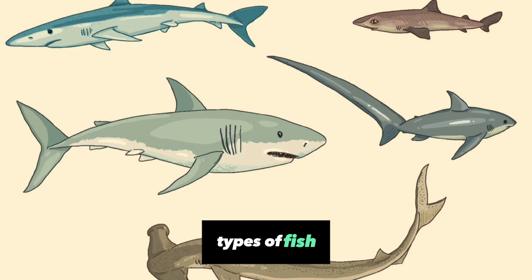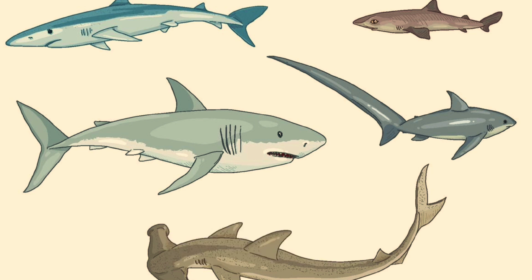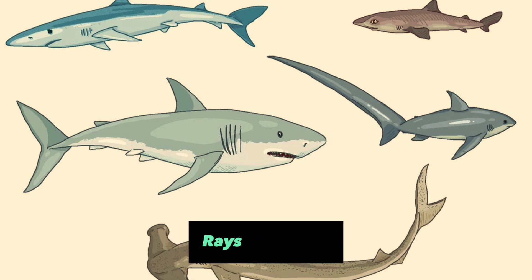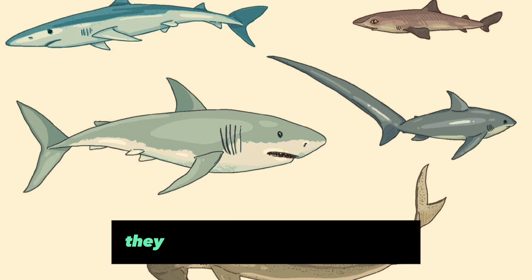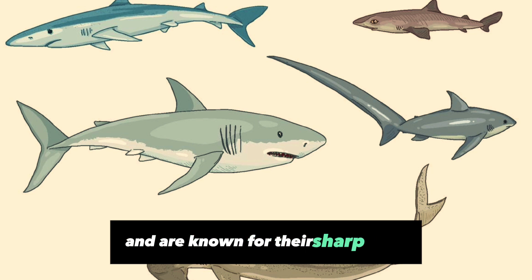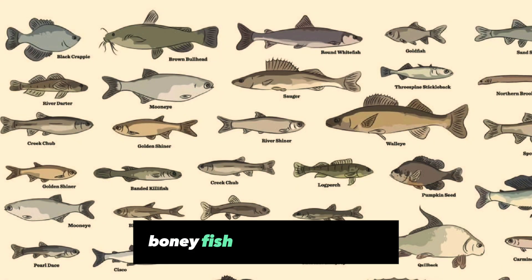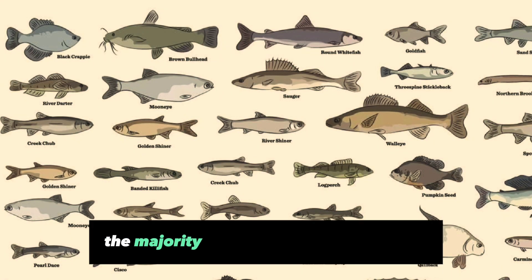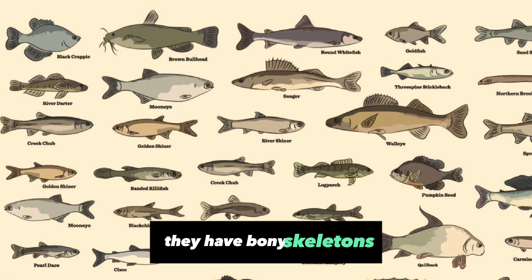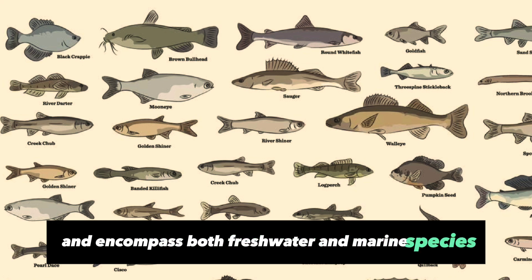Types of Fish: Cartilaginous Fish, Class Chondrichthyes — includes sharks, rays, and skates. They have cartilage instead of bone and are known for their sharp teeth and powerful predatory nature. Bony Fish — the majority of fish fall into this category. They have bony skeletons and encompass both freshwater and marine species.